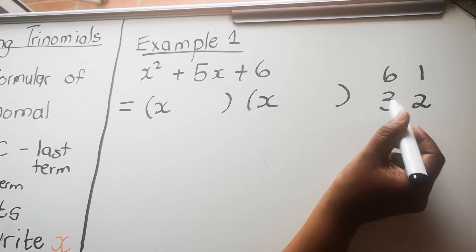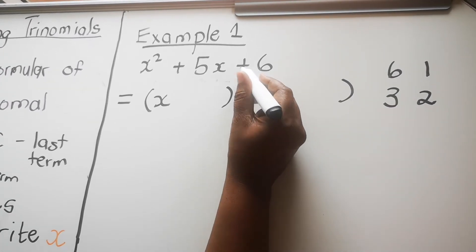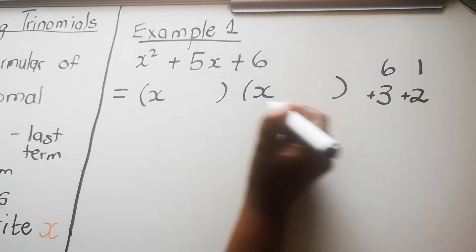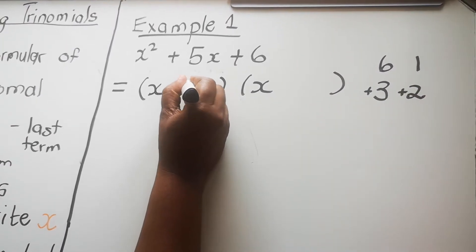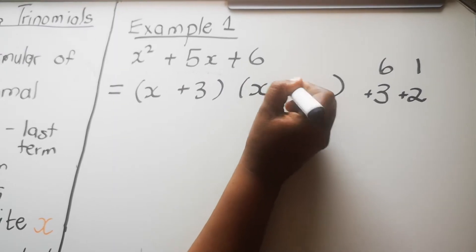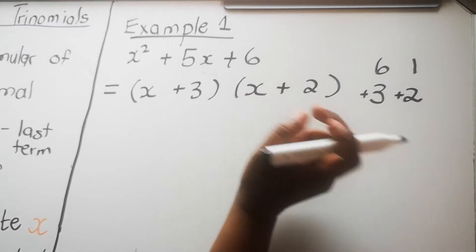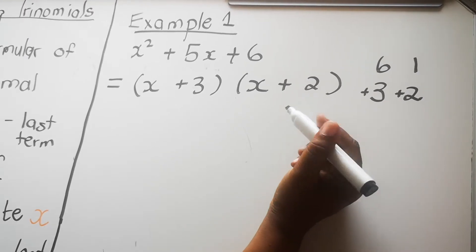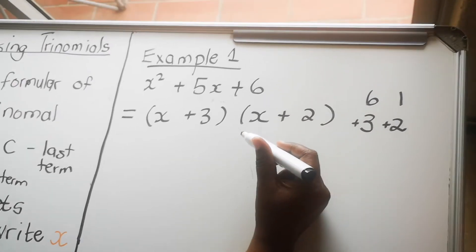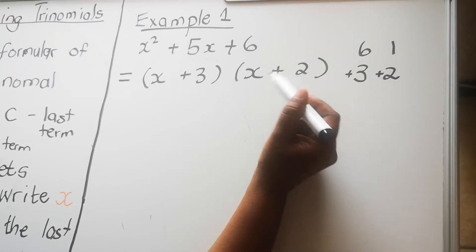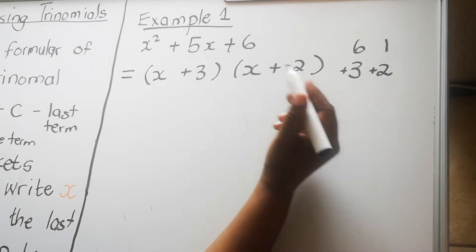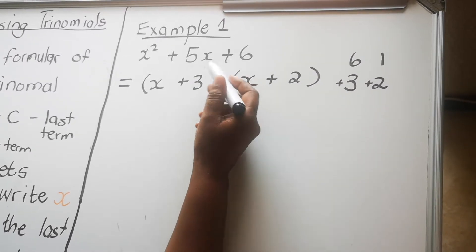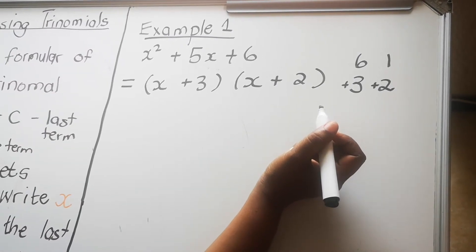Because the last term is positive, both factors will be positive. We plug them into the brackets: (x + 2)(x + 3). The order doesn't matter — by the commutative property it doesn't matter how you write them. That completes example one: x² + 5x + 6 = (x + 2)(x + 3).